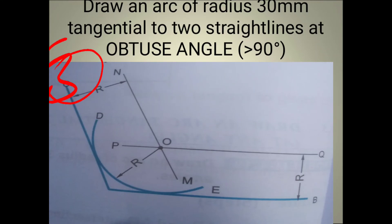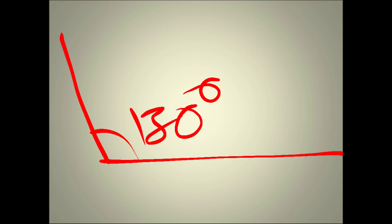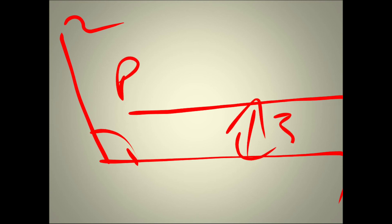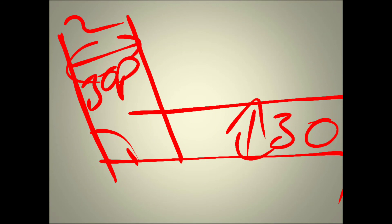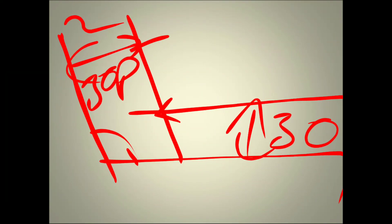Obtuse angle means the angle is above 90 degrees — that means 120, 130, 180, or whatever is above 90 degrees. For this, the procedure is the same as Model Number Two. I have taken 130 degrees as an example — above 90 degrees. Straight line one and straight line two are drawn, then draw a parallel line PQ at a distance of the given radius 30 mm. We get the center point O.